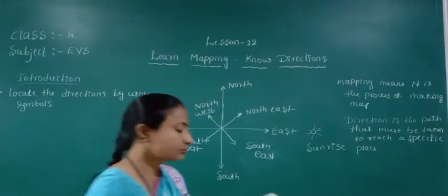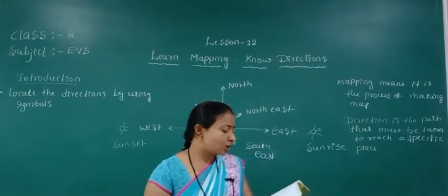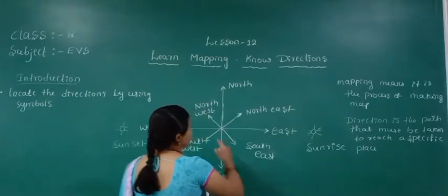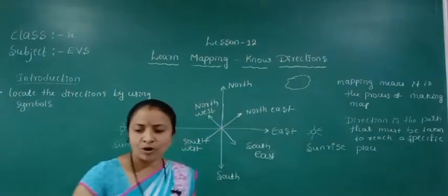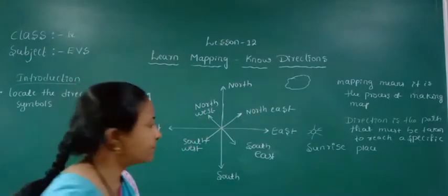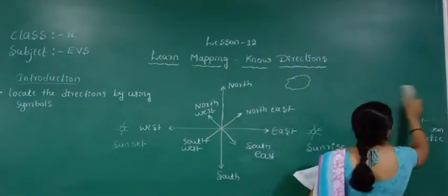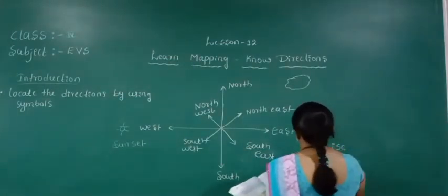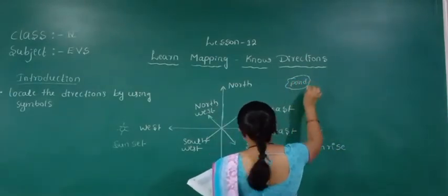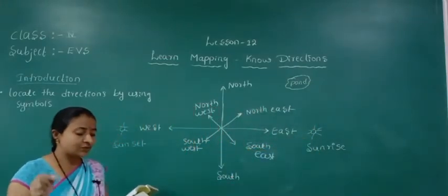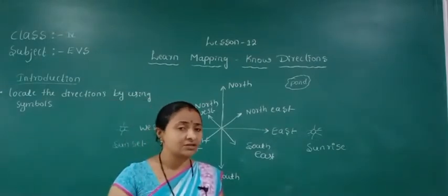First, they have given here — pond. Where does the pond come? Pond is in the north east direction. We will write the directions of the given places with reference to the banyan tree.